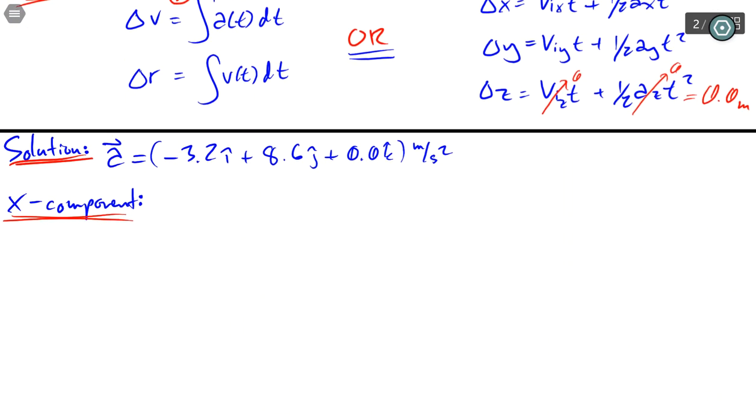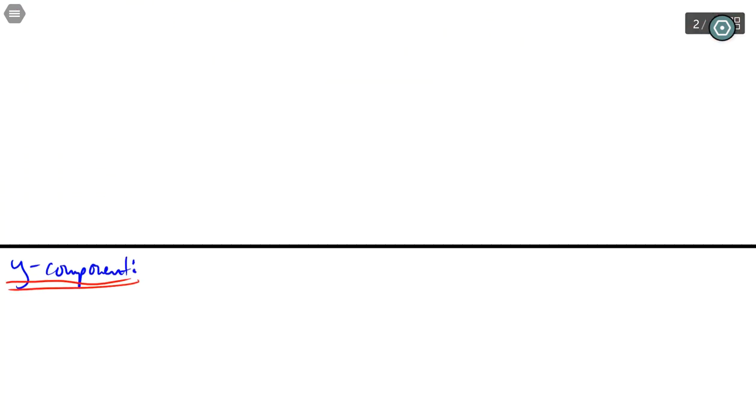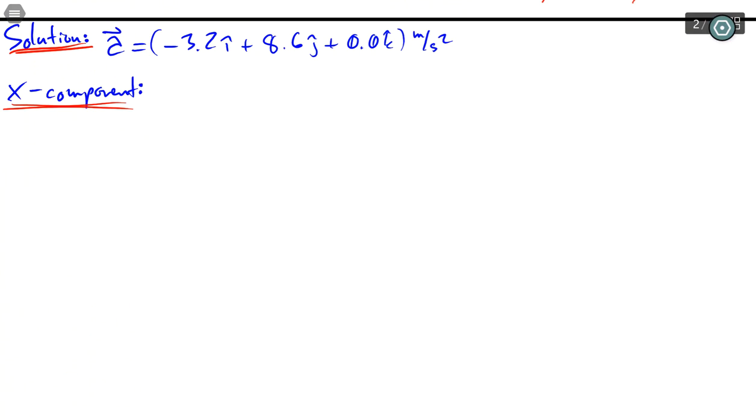I recommend doing this: I've already written the acceleration value here, the acceleration vector. I recommend splitting this between the x and y components. These are like two different problems altogether that you're going to have to solve, which makes it easier to do step by step. First, I'm going to take the x component, which is -3.2 meters per second squared.